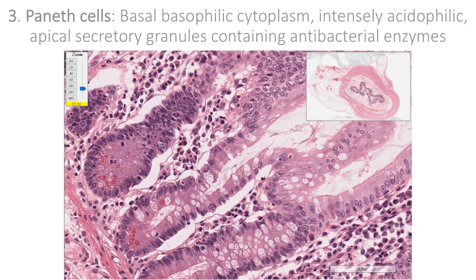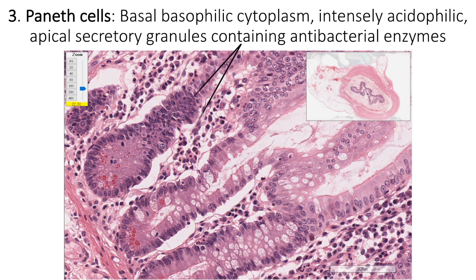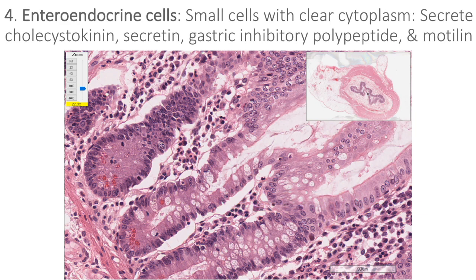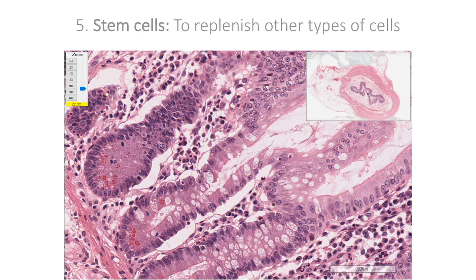Paneth cells are found at the base of intestinal glands. They have basal basophilic cytoplasm where the nucleus is also located. The apical cytoplasm shows intensely acidophilic secretory granules which contain antibacterial enzymes. Enteroendocrine cells are small cells with clear cytoplasm lying very close to the basement membrane. Two types — open and closed cells — are differentiated based on the presence or absence of a cytoplasmic process extending to the surface. These cells secrete cholecystokinin, secretin, gastric inhibitory polypeptide, and motilin in the small intestine.